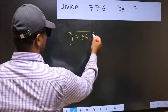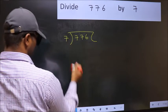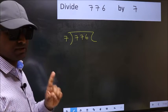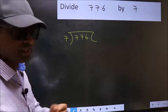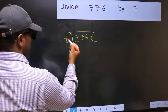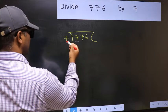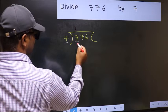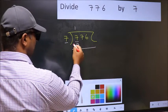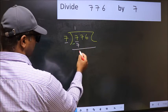776 and 7 here. This is your step 1. Next, here we have 7 and here also 7. When do we get 7 in 7 table? 7 once, 7. Now you should subtract. 7 minus 7, 0.